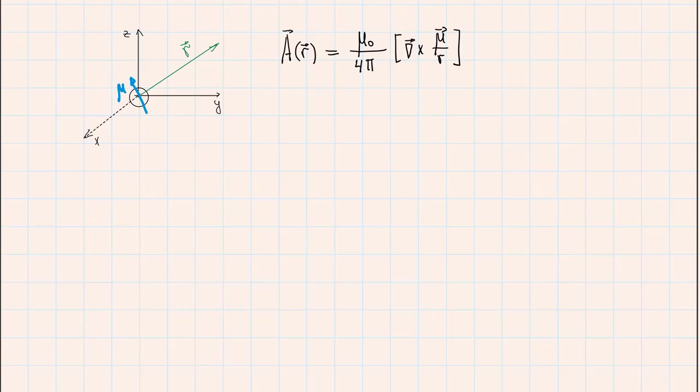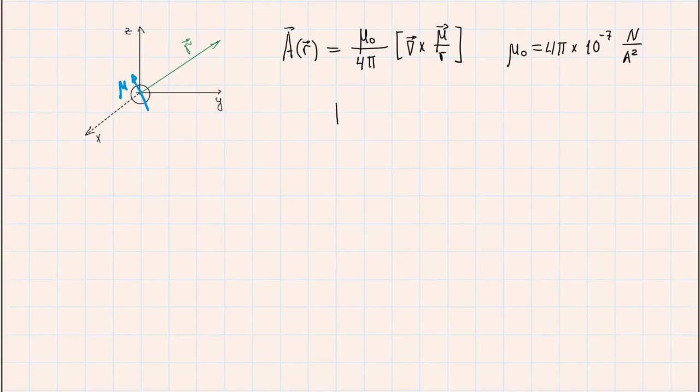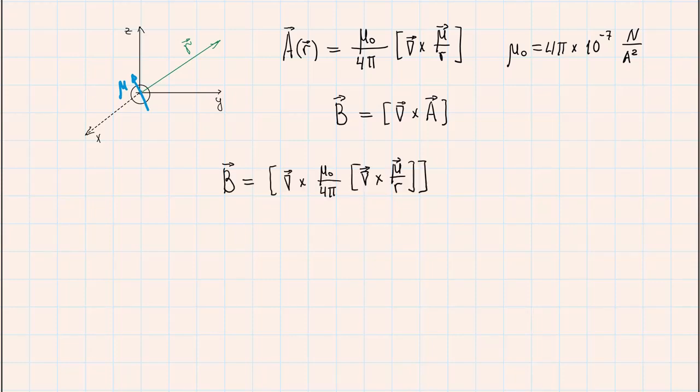Just to remind you, mu zero or vacuum permeability is this value. From electrodynamics we know that the vector potential A is responsible for a magnetic field B determined by another cross product. Using these two formulas we obtain a vector triple product.